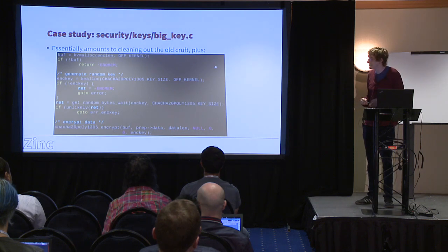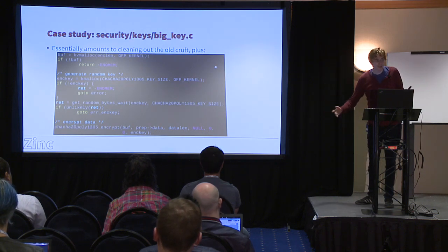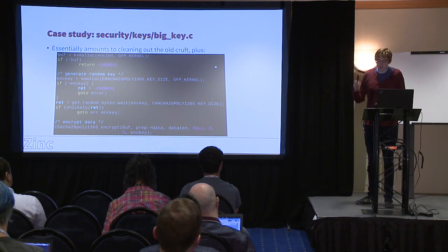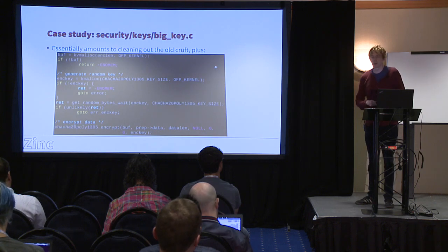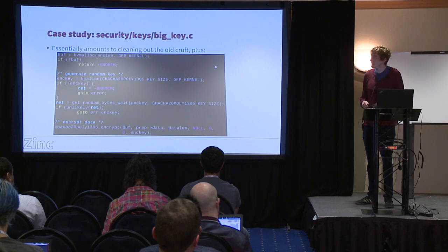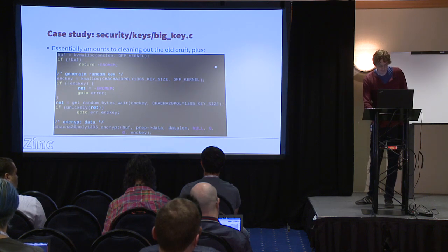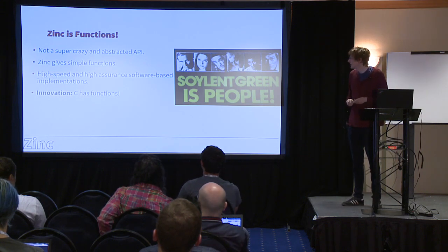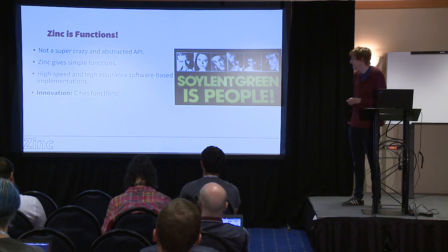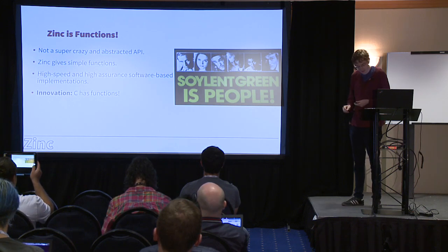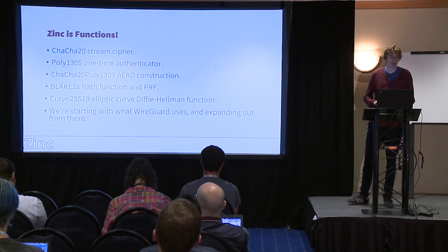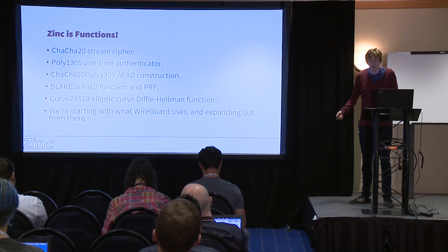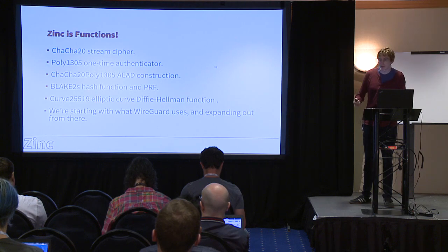There's not a lot of innovation here. We have a really complicated crypto API that does a million things. But what about straightforward, synchronous, software-based crypto? The current crypto API needs that - it can do accelerators and all that, but ultimately it needs software implementations. It would be nice to have really accessible ones for the many places in the kernel that just want simple software-based crypto. So Zinc is just functions - that's all it is. The innovation is realizing that crypto doesn't need to be more complicated just for the software aspect.